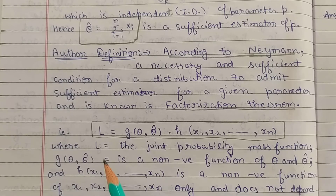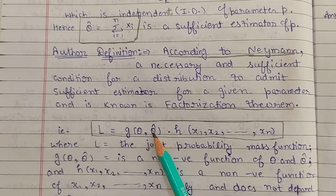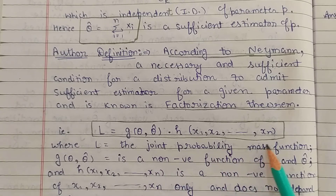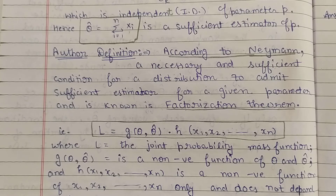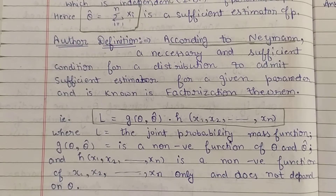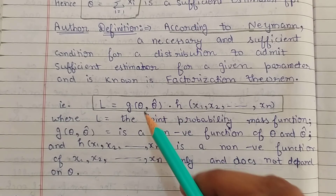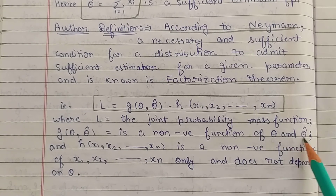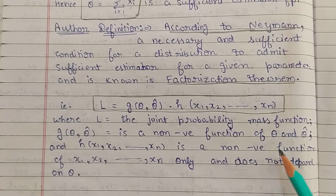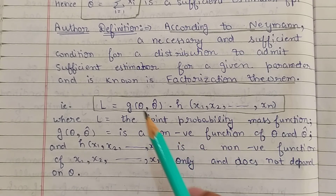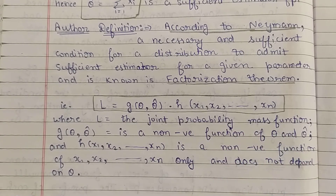The result of the Factorization Theorem is: L = G(theta cap, theta) * H(x1, x2, ..., xn), where L is the joint probability mass function. G(theta cap, theta) is a non-negative function of theta cap and theta, and H(x1, x2, ..., xn) is a non-negative function of x1, x2, ..., xn only and does not depend on theta.